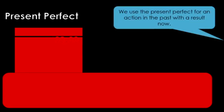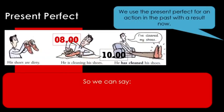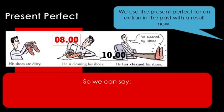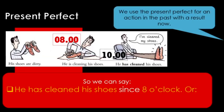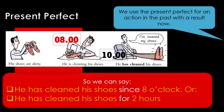Present perfect — remember we use the present perfect for an action in the past with the result now. For example, his shoes are dirty. At 8 o'clock he is cleaning his shoes, and now at 10 o'clock he has cleaned his shoes. So we can say he has cleaned his shoes since 8 o'clock, or he has cleaned his shoes for 2 hours.